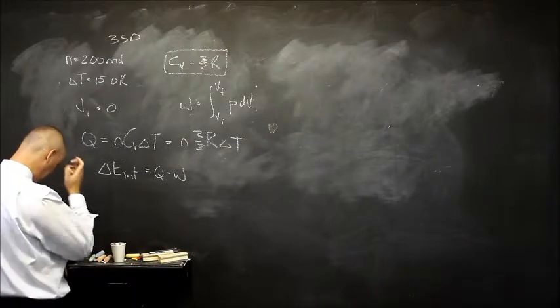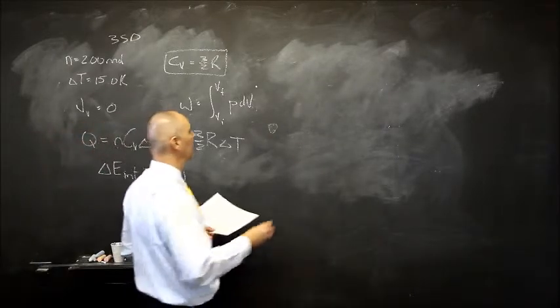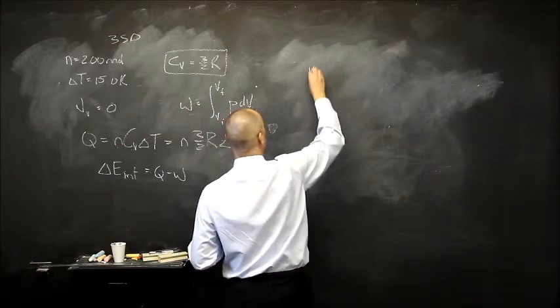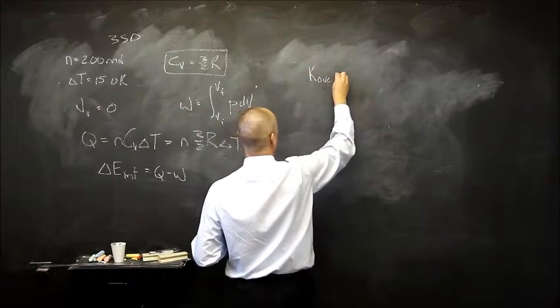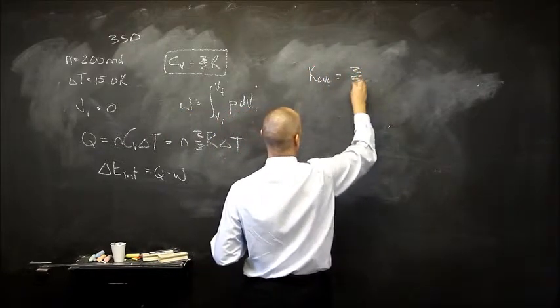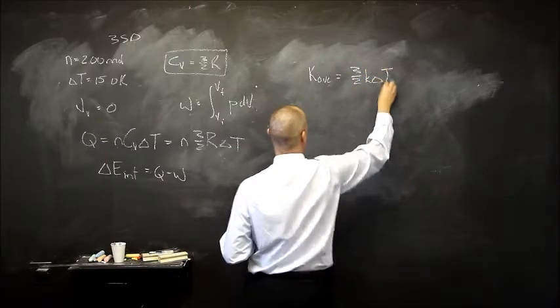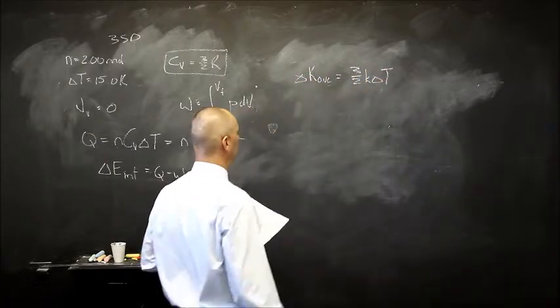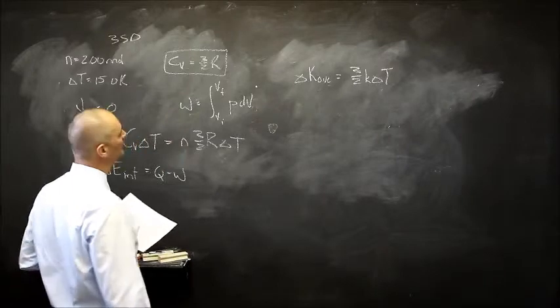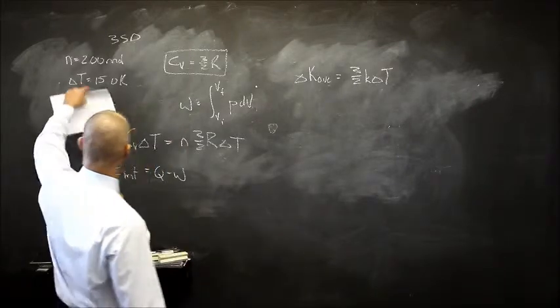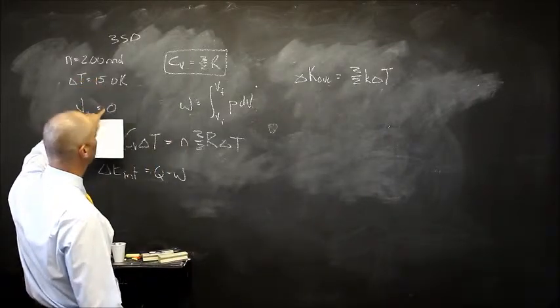And lastly what is the change in kinetic energy per atom? The average kinetic energy per atom equals 3 over 2 K delta T. If this becomes delta K average. So a nice problem, and we can start thinking about stuff as we read the problem.